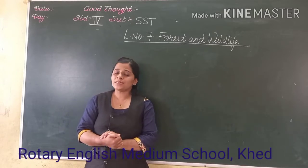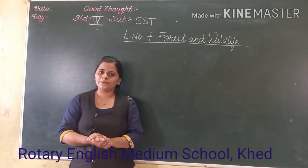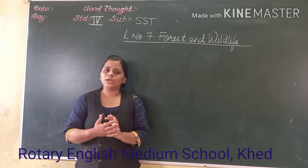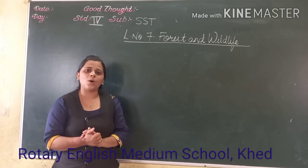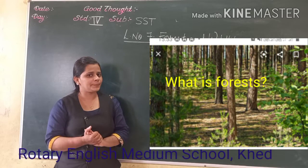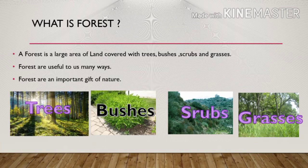In the last video, we started our chapter — lesson number 7, Forest and Wildlife. In that, we learnt about the introduction, that is, we learnt about what is forest. A forest is an area which is covered with trees, bushes, scrub, and grasses. And after that, we learnt that forests are the gift of nature and are very important for us.